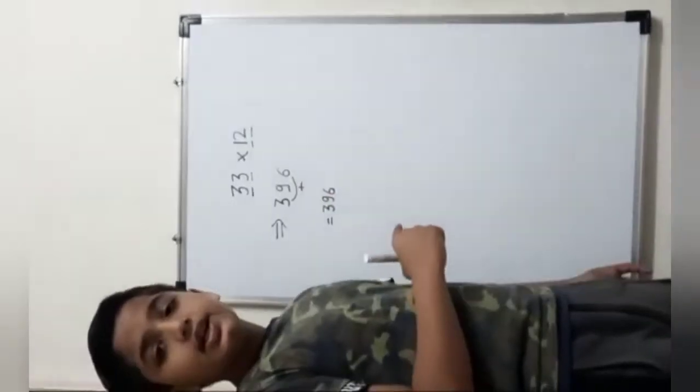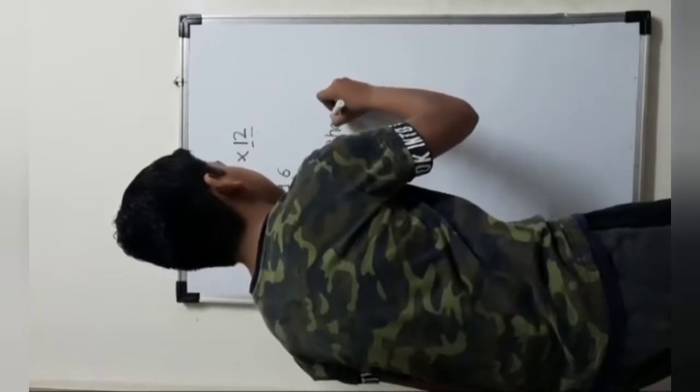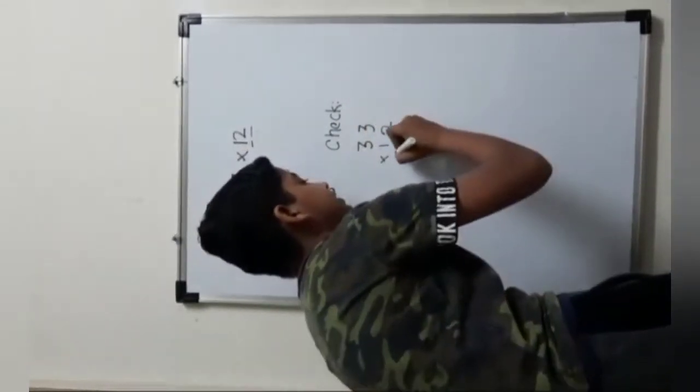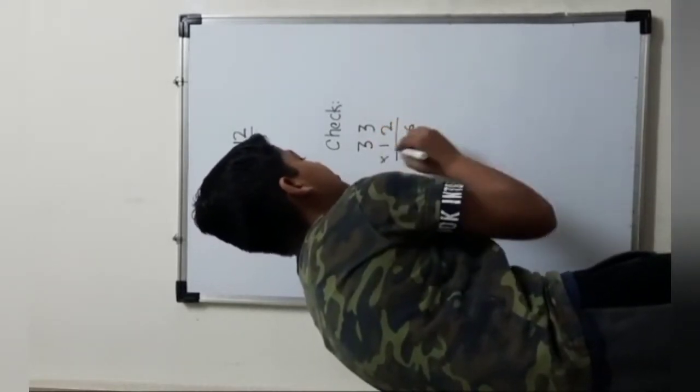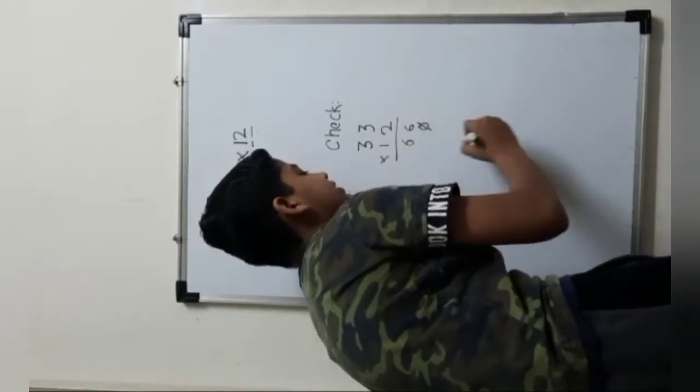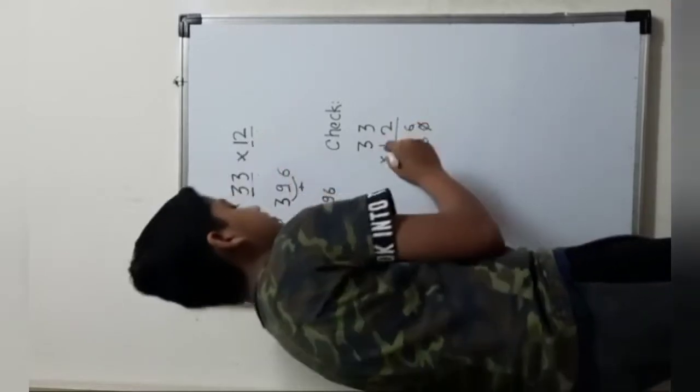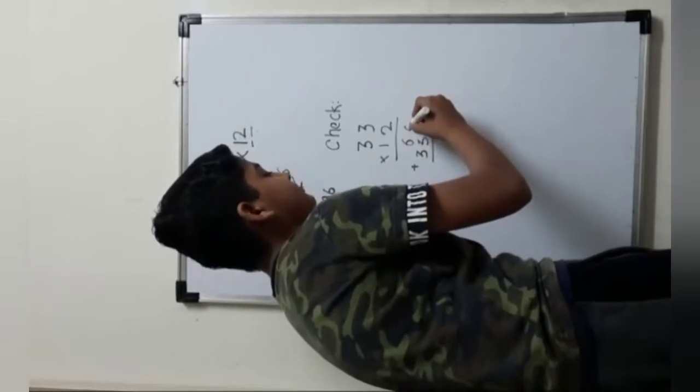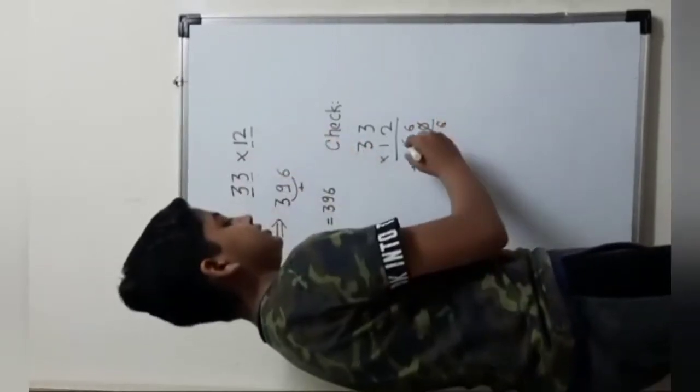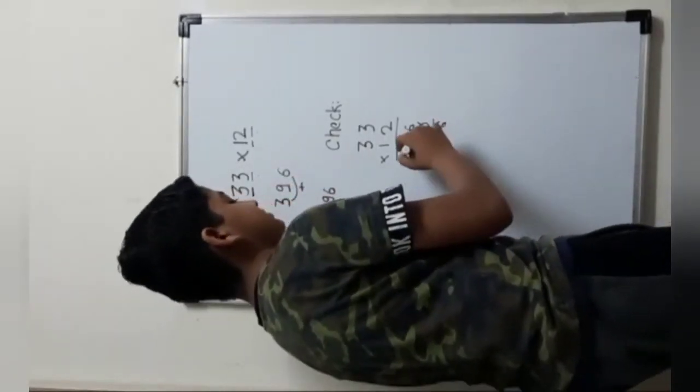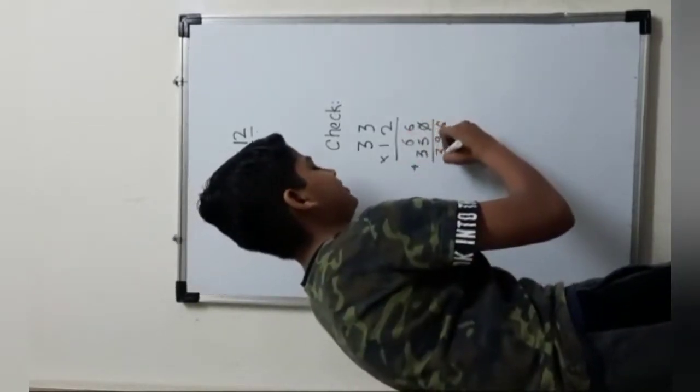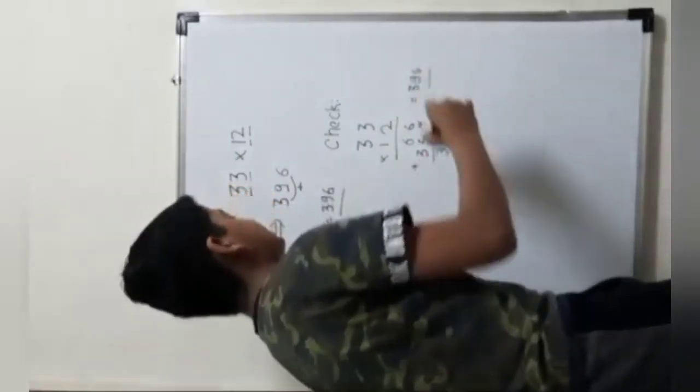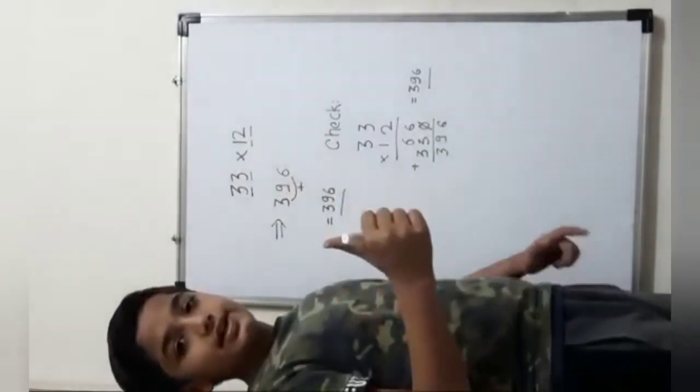Now, is this correct? Let's check it. So, check is 33 into 12. So, 33 into 12 is 2 3s are 6. Then, this 2 into this 3 is 6. Now, 1 zero will be there and it will be cut. So, 1 into 3 is 3. This 1 and this 3 is 3. So, we will add it and we will get the final answer. 6 plus 0 is 6. 6 plus 3 is 9. And there is no place miss. It will be 0 here. 0 plus 3 will be 3. So, check answer is 396. Both the answers are same. So, the trick we have done is correct. Thank you.